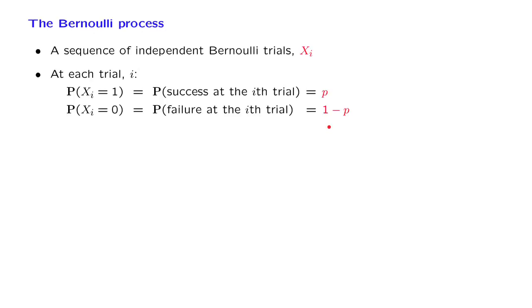Now, to keep things non-trivial, we will always assume that p is a number strictly between 0 and 1, because otherwise, in the extreme cases of p equal to 0 or p equal to 1, there isn't really any randomness.